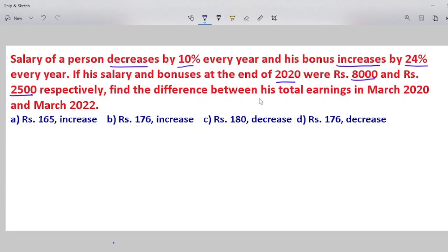We need to find the difference between his total earnings in March 2020 and March 2022. So the difference between 2020 and 2022, that's 2 years. First we calculate the decrease by 10 percentage.